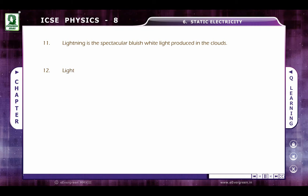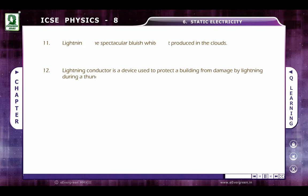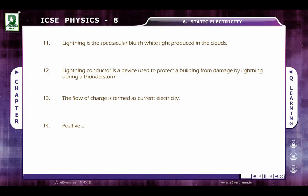Lightning is a spectacular bluish-white light produced in the clouds. A lightning conductor is a device used to protect a building from damage by lightning during a thunderstorm. The flow of charge is termed as current electricity. Positive charge flows from a higher potential to a lower potential.